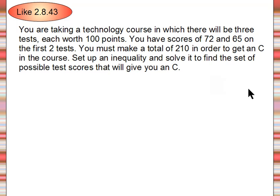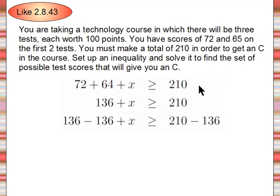All right, so hopefully you've worked the problem now. When you translate your inequality, you get 72 + 64 + X is greater than or equal to 210. You combine like terms, you subtract from both sides, and you end up with X is greater than or equal to 74. I hope you got that right.